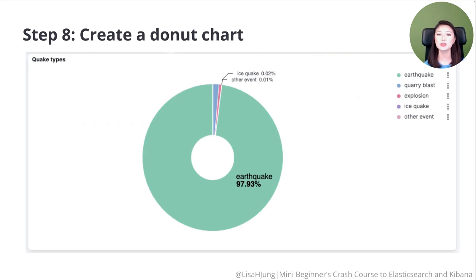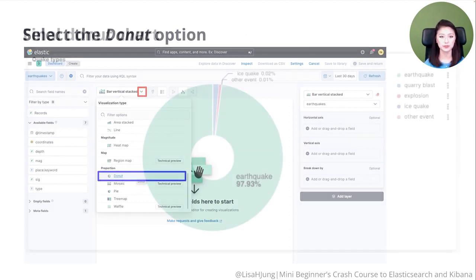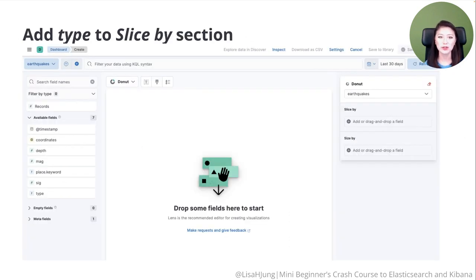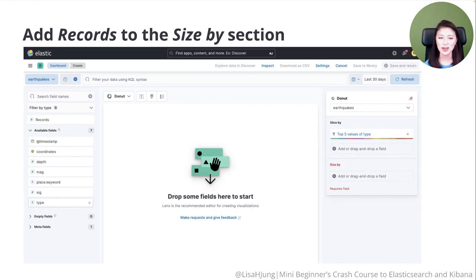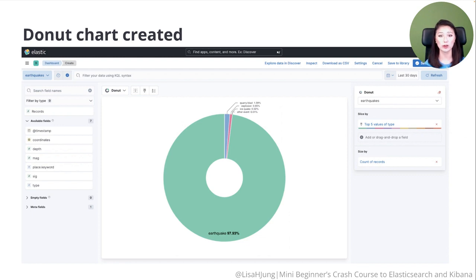Lastly, let's create a donut chart that shows the types and percentage of quakes in our dataset. From the Dashboard page, click on the Select Type option, then click on Lens. Click on the downward arrow and select the Donut option. The donut is divided into types of quakes, and each type is represented by a slice of the donut. Drag the field Type and drop it into the Slice By section. The size of the slice is determined by how many earthquakes of each type exist in our dataset. Drag Records and drop it into the Size By section. Lens automatically creates a donut chart showing the type and percentage of quakes. The majority of the quakes are of type Earthquake, with a little bit of ice quake, and some man-made quakes such as Quarry Blast, Explosion, and another event.